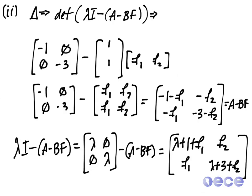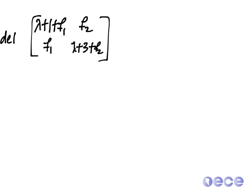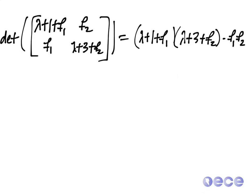So that gives us lambda I minus A minus BF. And we need to find the determinant of these values and set them equal to lambda plus 2 squared. So that's going to give us values of F such that our eigenvalues will turn out to be minus 2 and minus 2. So I'm going to take this over to the next page here. So now we want to find the determinant, which is going to be equal to lambda plus 1 plus f1 times lambda plus 3 plus f2, minus f2 minus f1 f2. So that's our determinant.